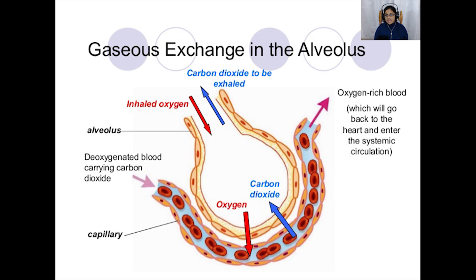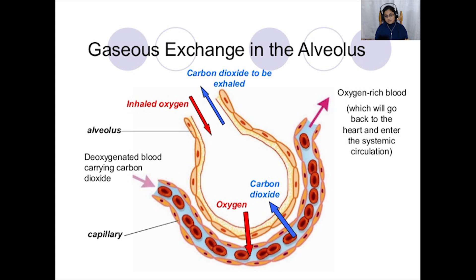Because the air in the alveolus has a higher concentration of oxygen than the blood entering the capillary network, oxygen diffuses from the air across the wall of the alveolus into the blood. At the same time, there is more carbon dioxide in the blood than in the air of the lungs, so there is a diffusion gradient for carbon dioxide in the opposite direction — carbon dioxide diffuses out of the blood and into the alveolus. The result is that blood leaving the capillaries and flowing back to the heart has gained oxygen and lost carbon dioxide. The heart then pumps this blood around the body to supply the respiring cells.